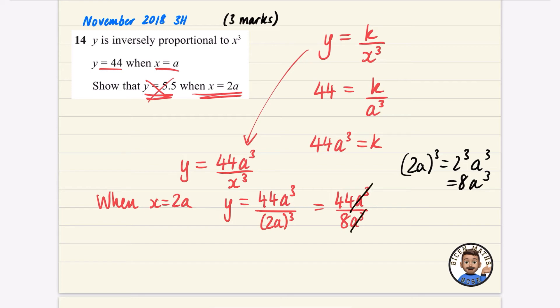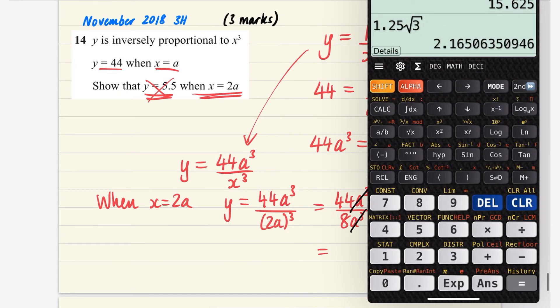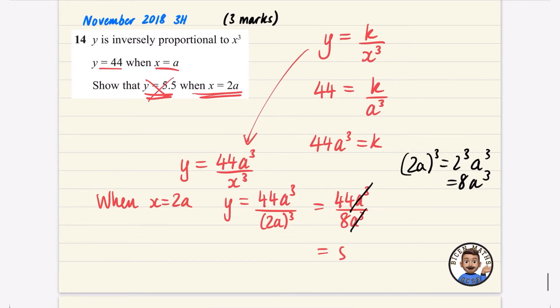The A cubed will cancel. So I have 44 divided by 8. We're hoping that that's going to give us a 5.5. And 44 divided by 8 is 5.5. So we've shown that when X equals 2A, Y equals 5.5. And this is question 14. Usually there's about 20 or 22 questions. So it's about two thirds of the way through the exam paper.